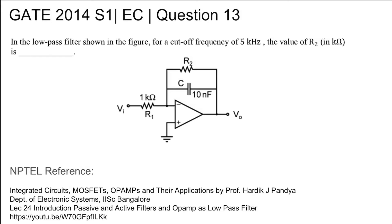This is GATE 2014 Set 1 EC question number 13. In the low-pass filter shown in the figure, for a cutoff frequency of 5 kilohertz, the value of R2 in kilo ohms is to be found. The NPTEL reference is lecture number 24: Introduction to Passive and Active Filters and Op-Amp as Low-Pass Filter.